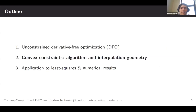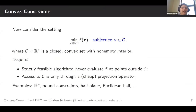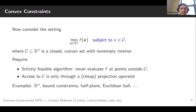Now let's look at introducing constraints. The setting I'm going to use is: minimize f(x) subject to x lying in C, where C is some closed convex set with non-empty interior. What I'm asking for is that the algorithm I produce is strictly feasible — I never want to evaluate f outside of C. I'm going to assume that my access to C comes from a Euclidean projection operator, which I assume is cheap so I can do as many projections as I need. This captures a reasonable variety of constraints including box constraints, half-planes, balls, and so on, as well as generalizing the unconstrained case.